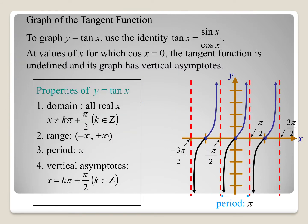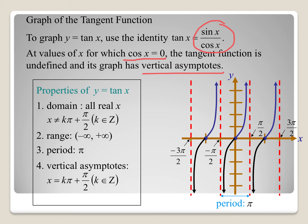For the tangent function, we use the quotient identity: tangent equals sine of x over cosine of x. Because of that, we identify where cosine of x equals 0 to find our vertical asymptotes. The domain is all real numbers where x does not equal a multiple of pi over 2, because that's where cosine equals zero. The range is negative infinity to positive infinity, and the period is pi.